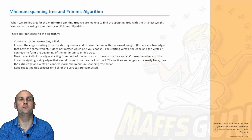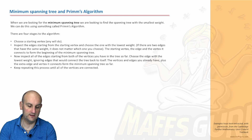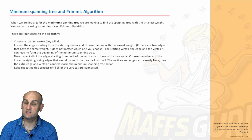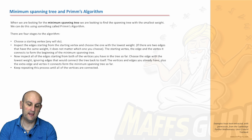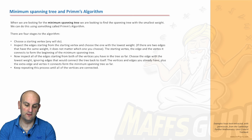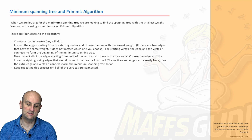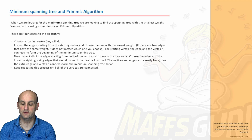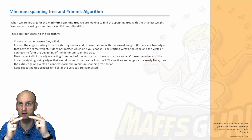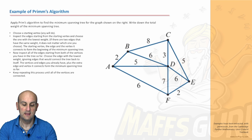Prim's algorithm is a way of finding the minimum spanning tree. The rules: choose a starting vertex, inspect all edges from that vertex and choose the one with the lowest weight. If two edges have the same weight, it doesn't matter which you pick. The starting vertex, the edge, and the vertex it connects to form the beginning of the minimum spanning tree. Then inspect all edges from all vertices in your tree and choose the next smallest edge, repeating until done — ensuring no edges join back together.